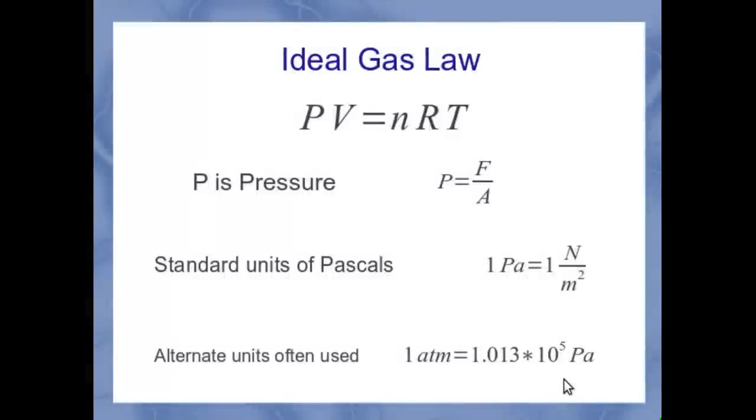So, for example, pressure. P in this equation stands for pressure. And if we break that down into its physics concepts, pressure is really a force spread out over a particular area. In physics, force is described as newtons, and area is meters squared. And so a newton per meter squared gives us a new unit called pascals. And that's described as just a Pa.